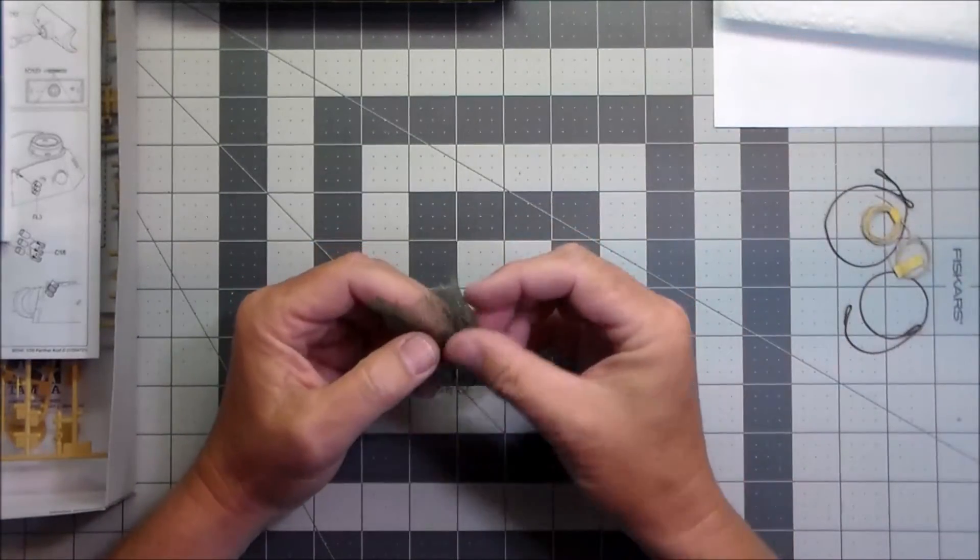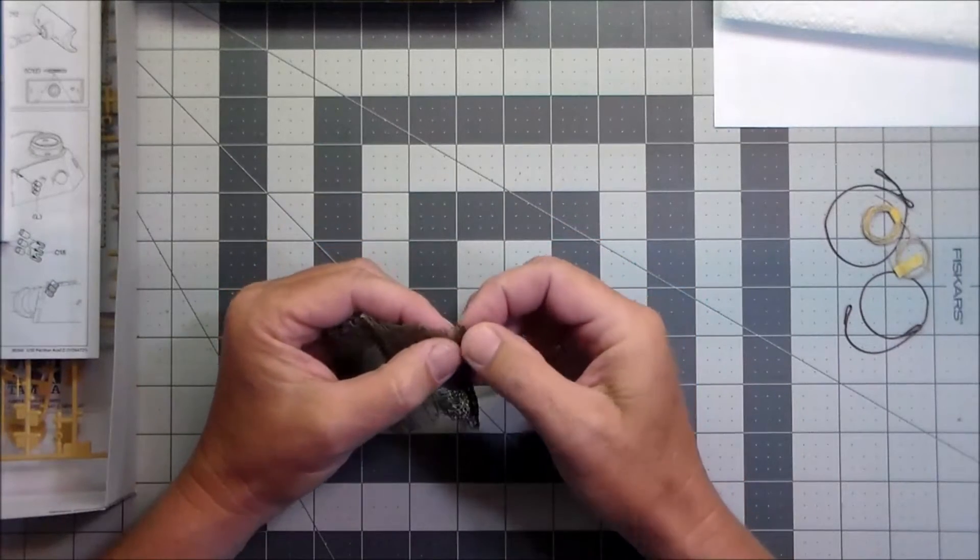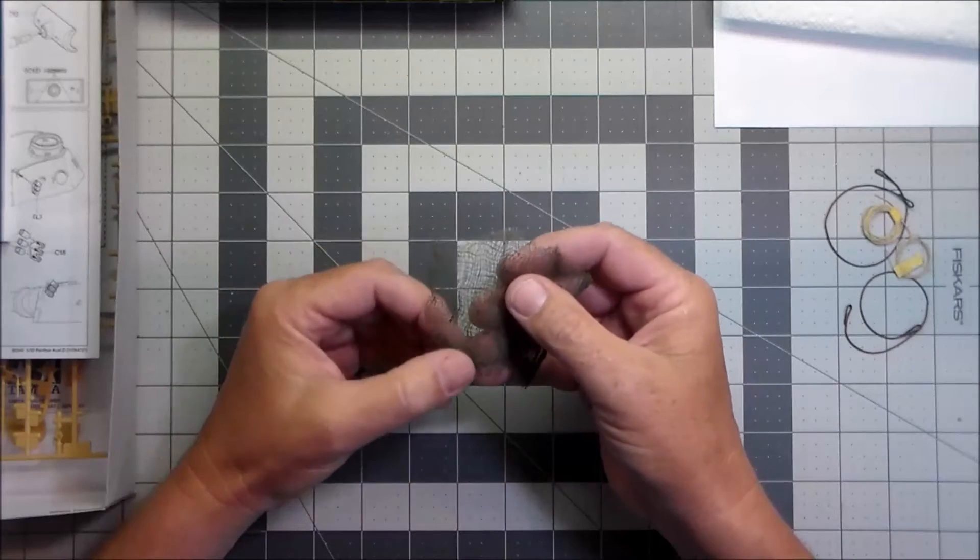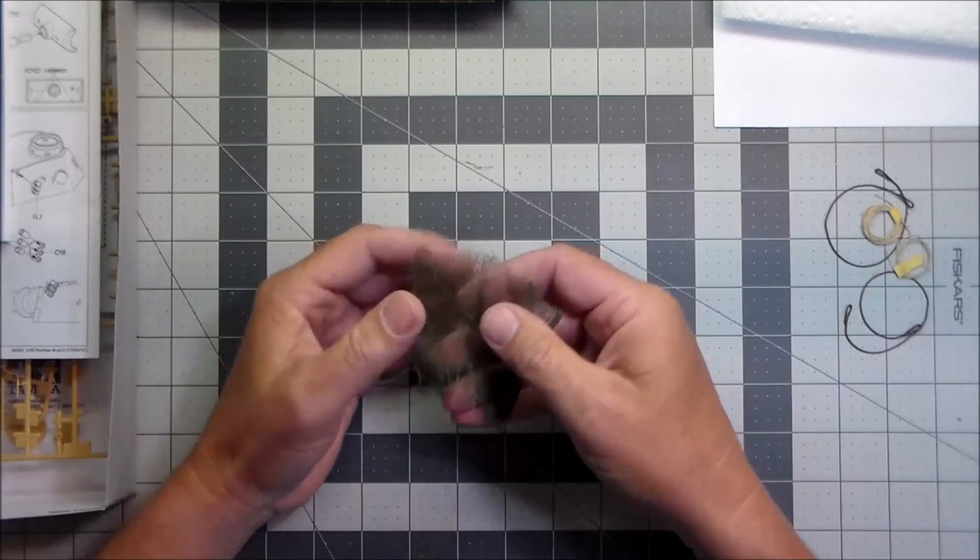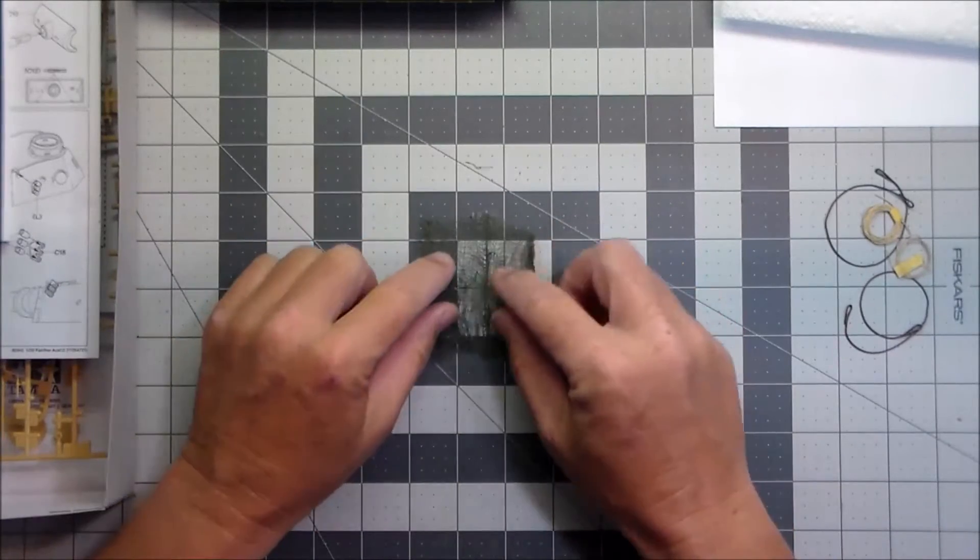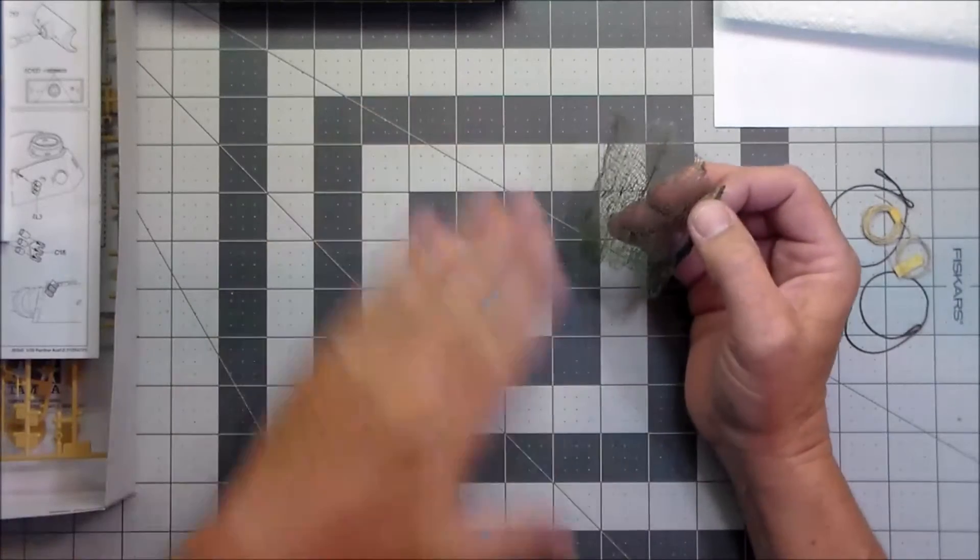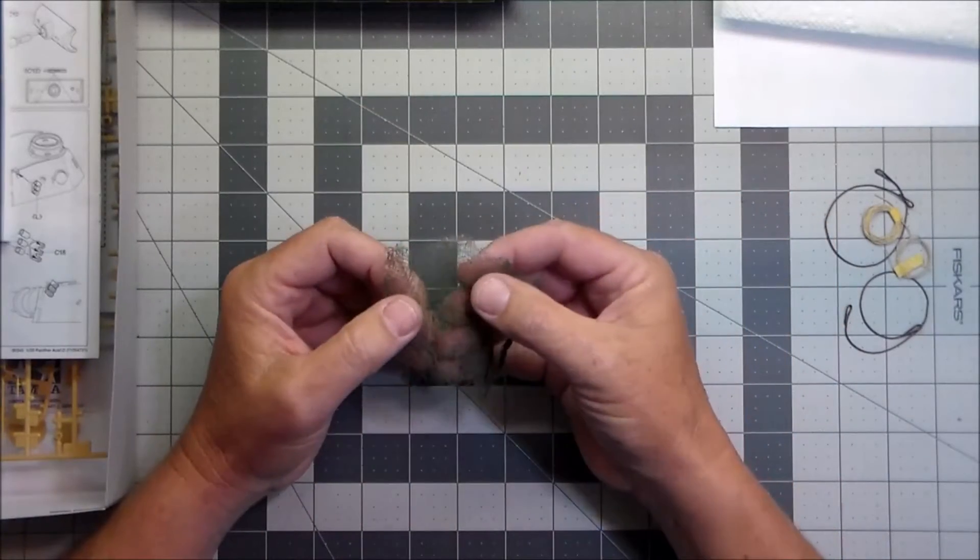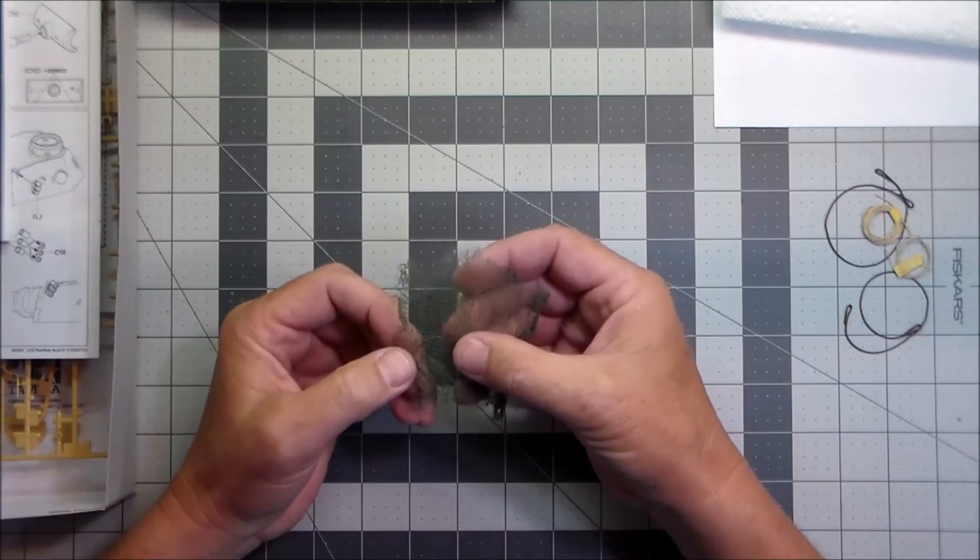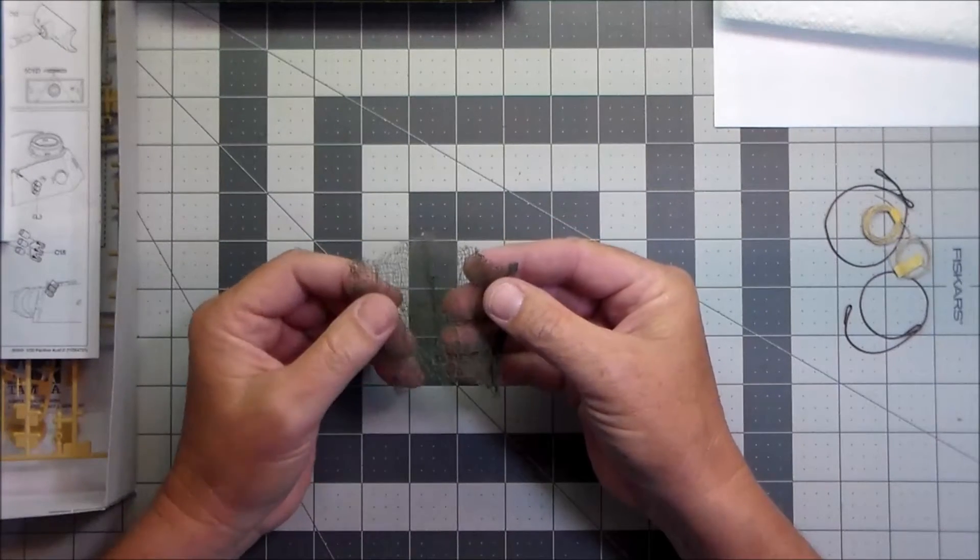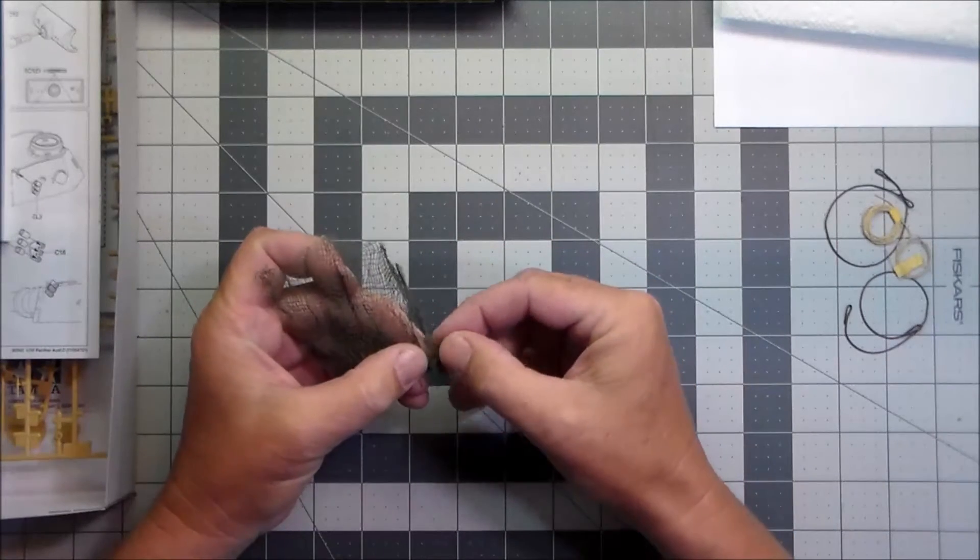And then he also sent me this awesome camo netting. I mean, I don't know what this is or where he got it, but it looks like the real deal. And it's a good scale size and it's got that nice uneven weave. I've seen some camo nettings that they're just, they look too perfect. And this has got like a nice uneven weave to it, so it looks like camo netting. And that will also come in handy on a project.